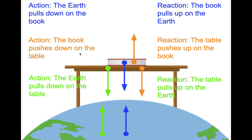Another pair: the action is the book pushes down on the table; the reaction is the table pushes up on the book. Now, the normal force and the gravitational force on the book are equal in size and opposite in direction — we know that because the book is at rest, so the net force is zero. That's Newton's First Law. But they are NOT action-reaction pairs, because they are both acting on the same object.